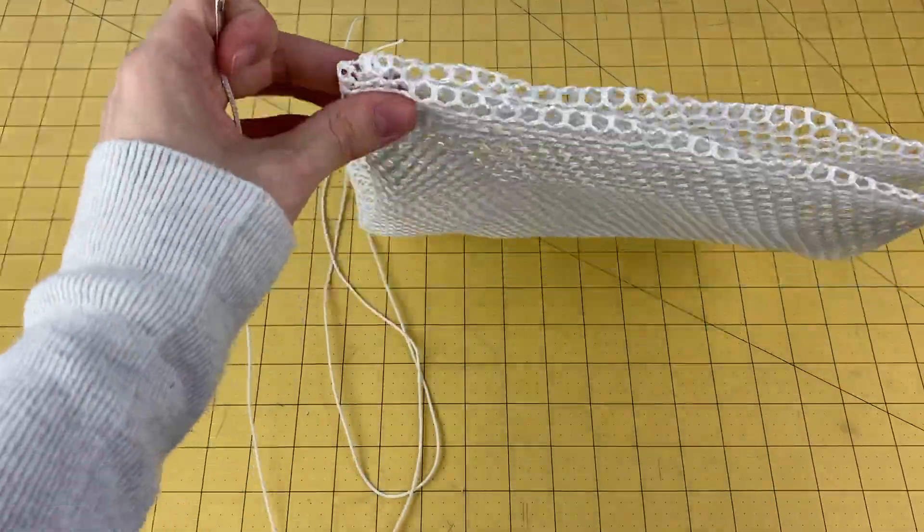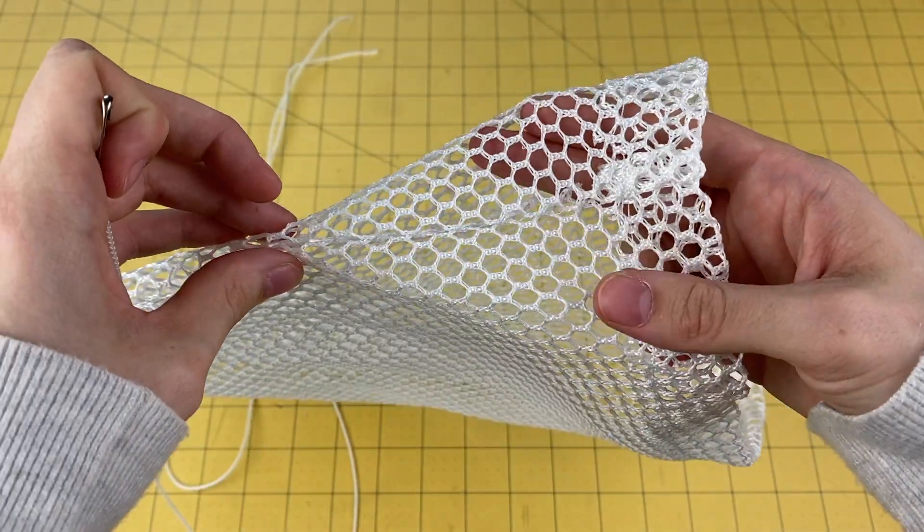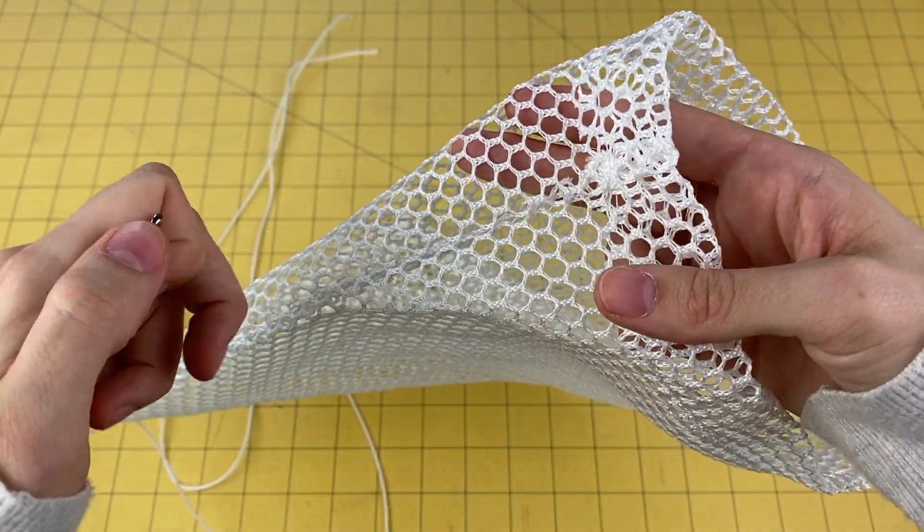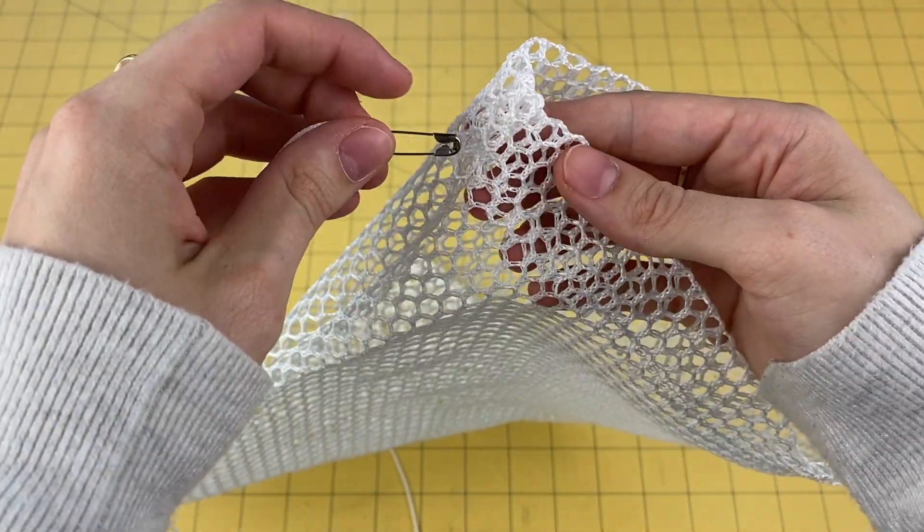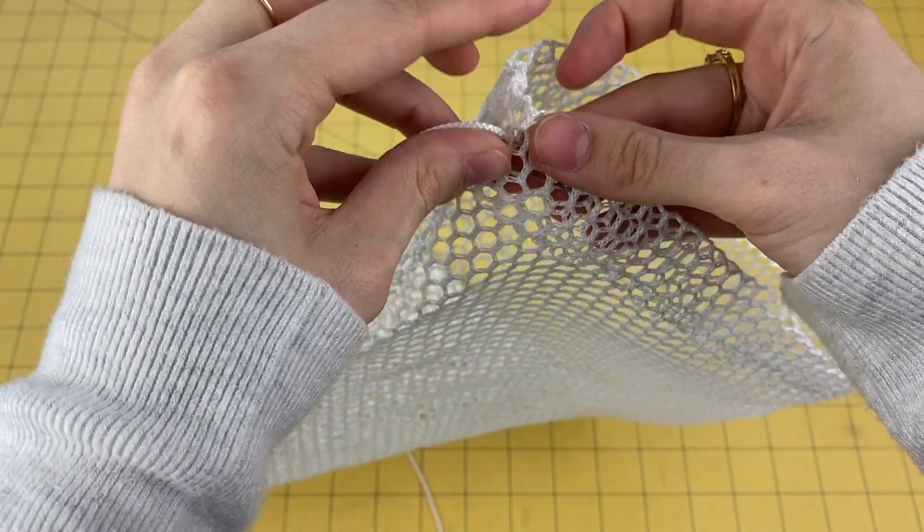Grab a safety pin and attach it to the end of one piece of cording. Then, thread the cording through the tunnel along one side of the bag and then the other, so that the ends of that piece of cording meet from the same entry and exit point.